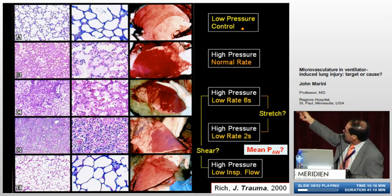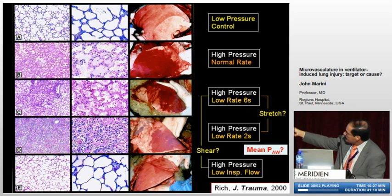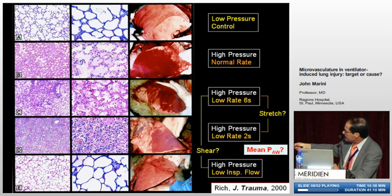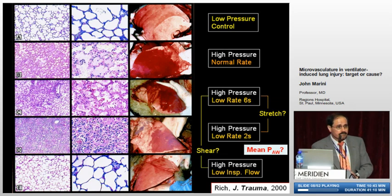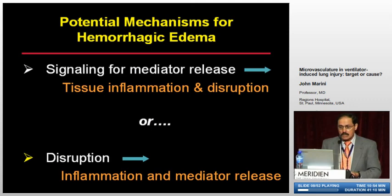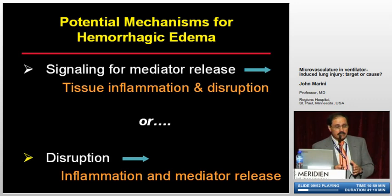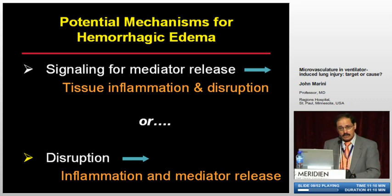Under low airway pressure controlled conditions, the lung tissue looks normal. When high inflation pressures are used at normal ventilation rates, there is tremendous bleeding and infiltration. Tissue hemorrhage was a big part of the inflammation they saw. What is the mechanism for that hemorrhagic edema? It could be signaling and mediator release leading to tissue inflammation and disruption, or it could be disruption and then inflammation and mediator release — and the answer to that question is a very important one.